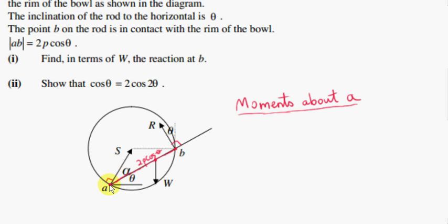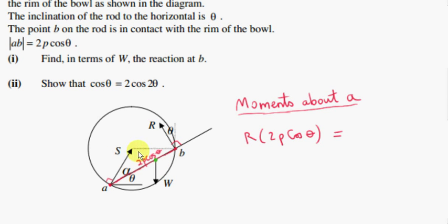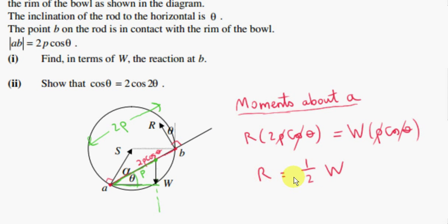To answer part one, we take moments about point A. That means we can ignore force S, because its moment about A is zero. R has an anticlockwise moment about A, and W has a clockwise moment. So the anticlockwise moment equals the clockwise moment. We multiply R by the perpendicular distance from the line of action of R to A, which is given as 2P cos theta. As for W, the center of gravity is at the midpoint of the rod of length 2P, so that distance is P. We multiply P by cos theta to get the perpendicular distance to the line of action of W, giving W times P cos theta. We end up finding that R has half the magnitude of the weight of the rod.